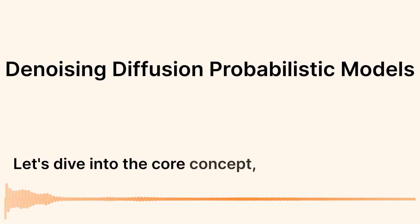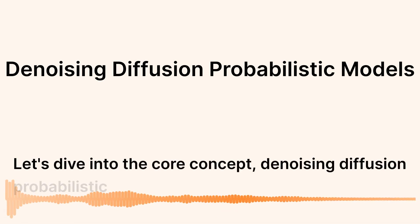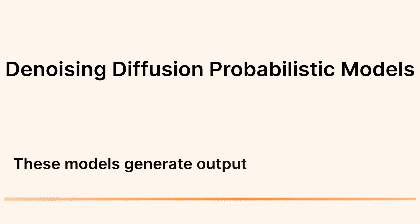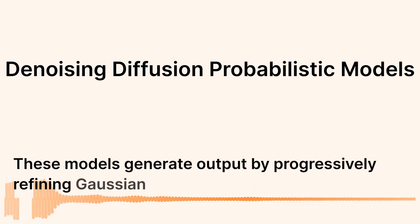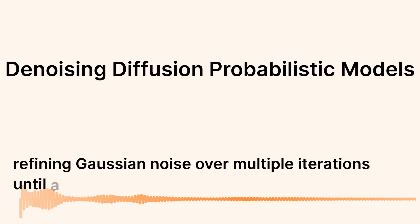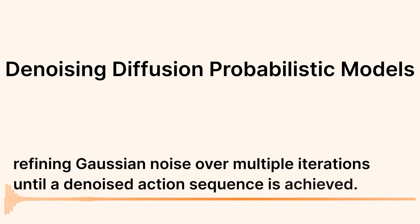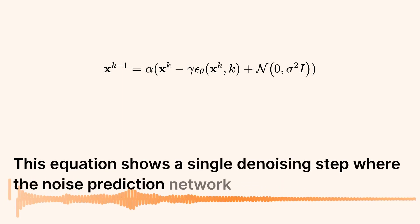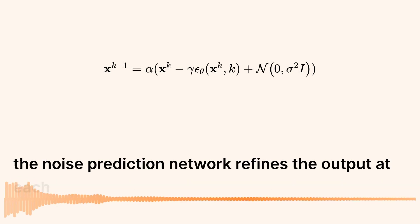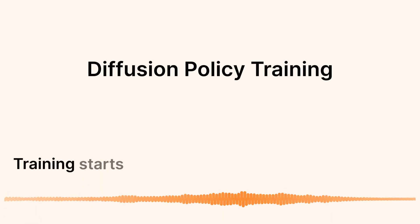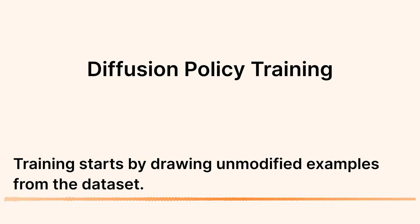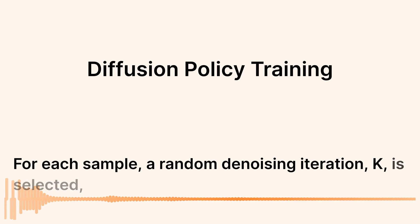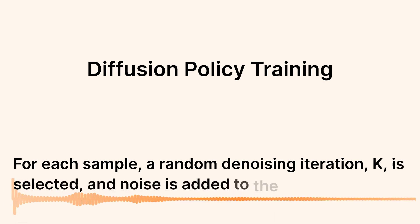Let's dive into the core concept: Denoising Diffusion Probabilistic Models. These models generate output by progressively refining Gaussian noise over multiple iterations until a denoised action sequence is achieved. This equation shows a single denoising step, where the noise prediction network refines the output at each iteration. Training starts by drawing unmodified examples from the dataset, and for each sample, a random denoising iteration K is selected and noise is added to the example.